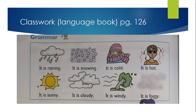Read these short sentences with me. It is raining. It is snowing. It is cold. It is hot. It is sunny. It is cloudy. It is windy. It is foggy.